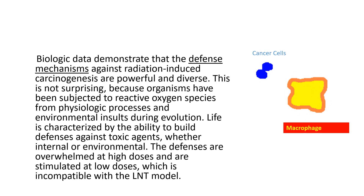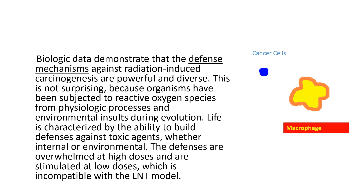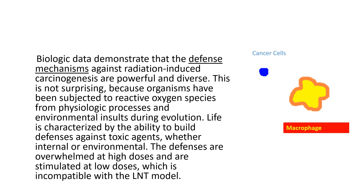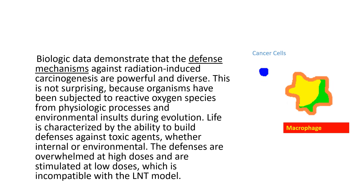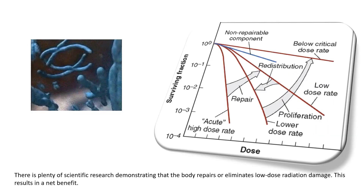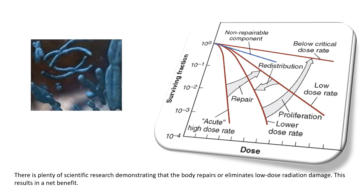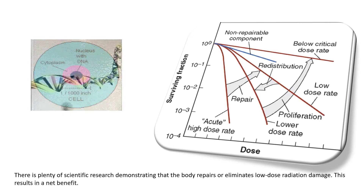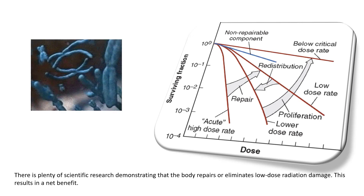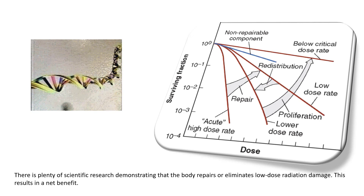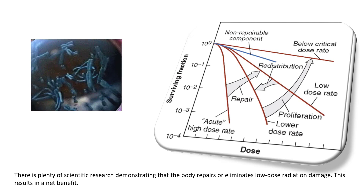The adaptive response of the body to radiation tells us that we have a number of different defenses or mechanisms to fight against the carcinogenesis that is a result of ionizing interaction of radiation with tissue. It's not surprising because our organisms have been exposed to ionizing radiation since the beginning of time. There is plenty of scientific research demonstrating that the body repairs or eliminates low-dose radiation damage, resulting in a net benefit. Looking at the surviving fraction of cells that have had a dose of ionizing radiation applied, we see that some are non-repairable and some are repaired, and this all depends upon the dose rate.